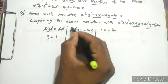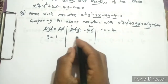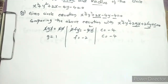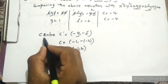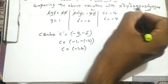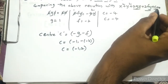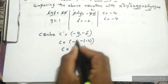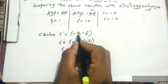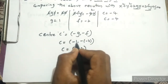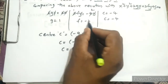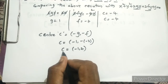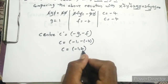Canceling y and dividing by 2, f value becomes -2, and c value is -4. For the general circle equation, the center is (-g, -f). g = 1, so -g = -1. f = -2, so -f = -(-2) = +2. The center is (-1, 2).